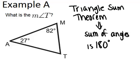Now we can use this to solve Example A, which asks what is the measure of angle T? To find this missing angle, we have to realize that the three angles in the triangle have to add up to 180.